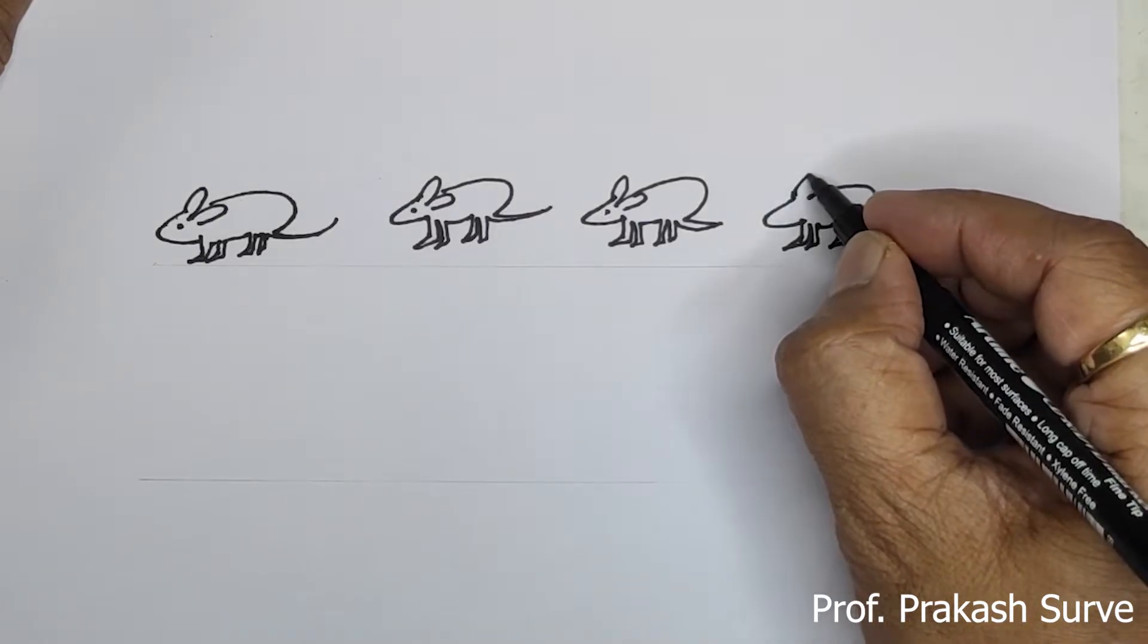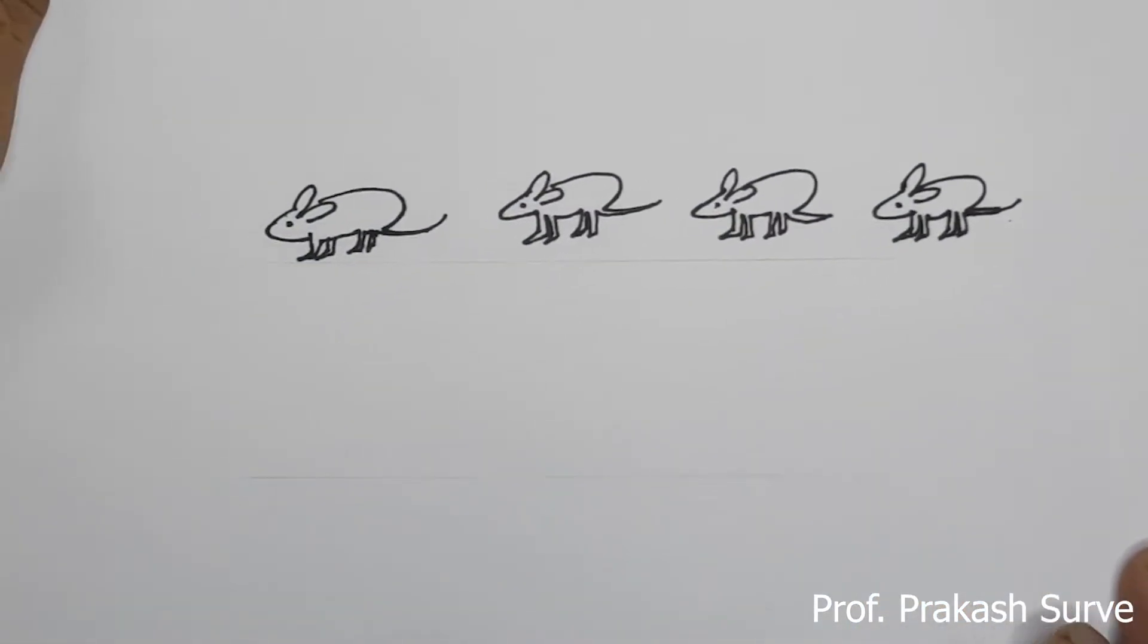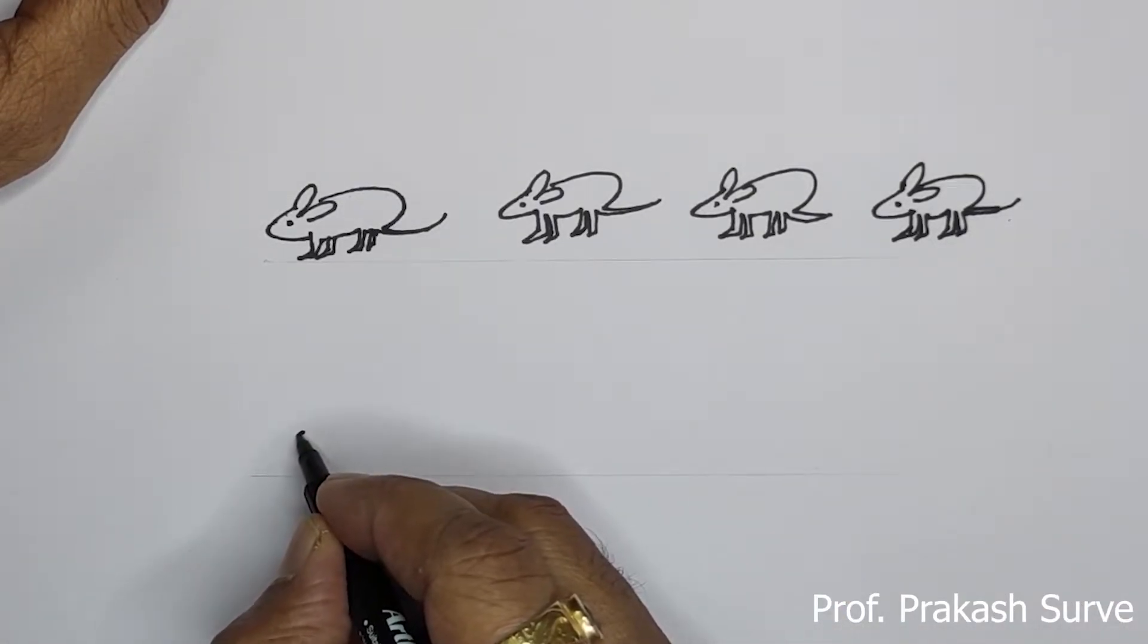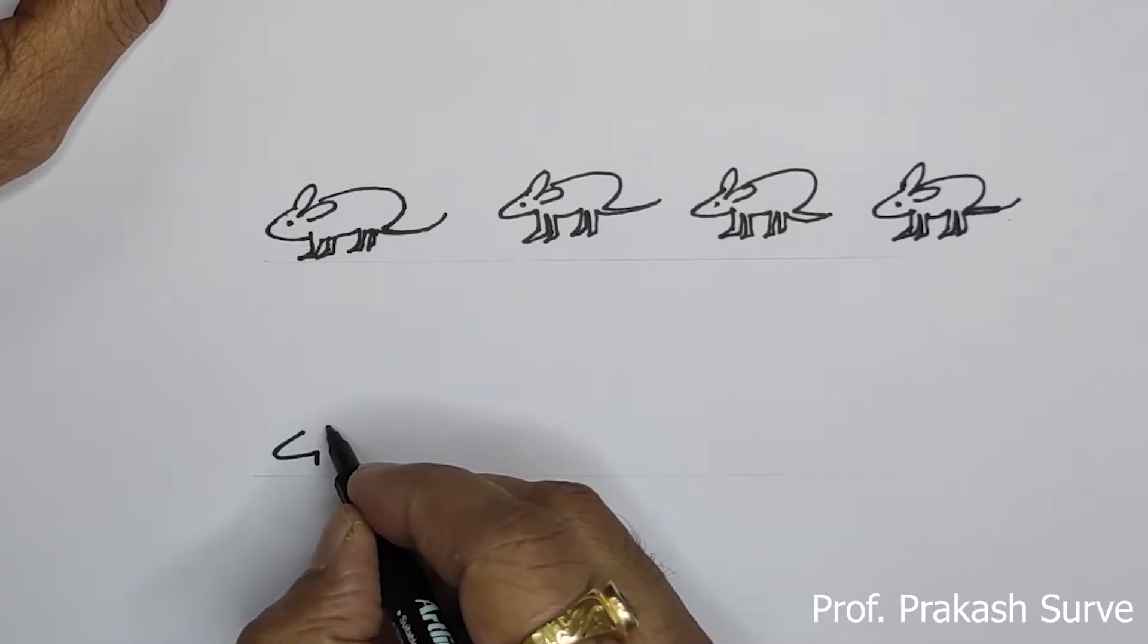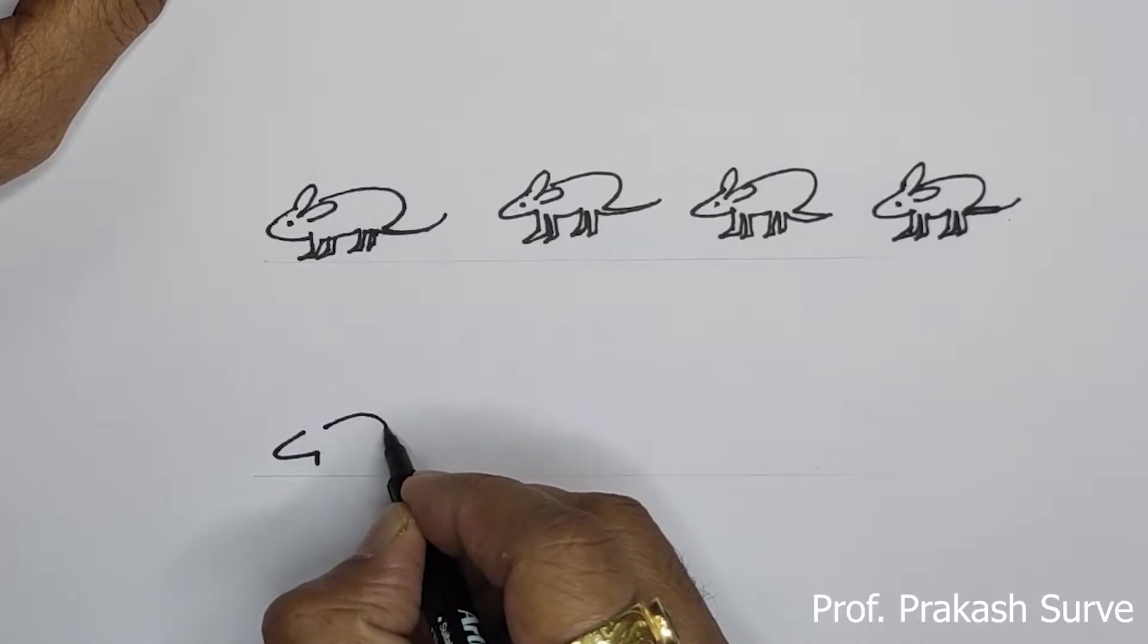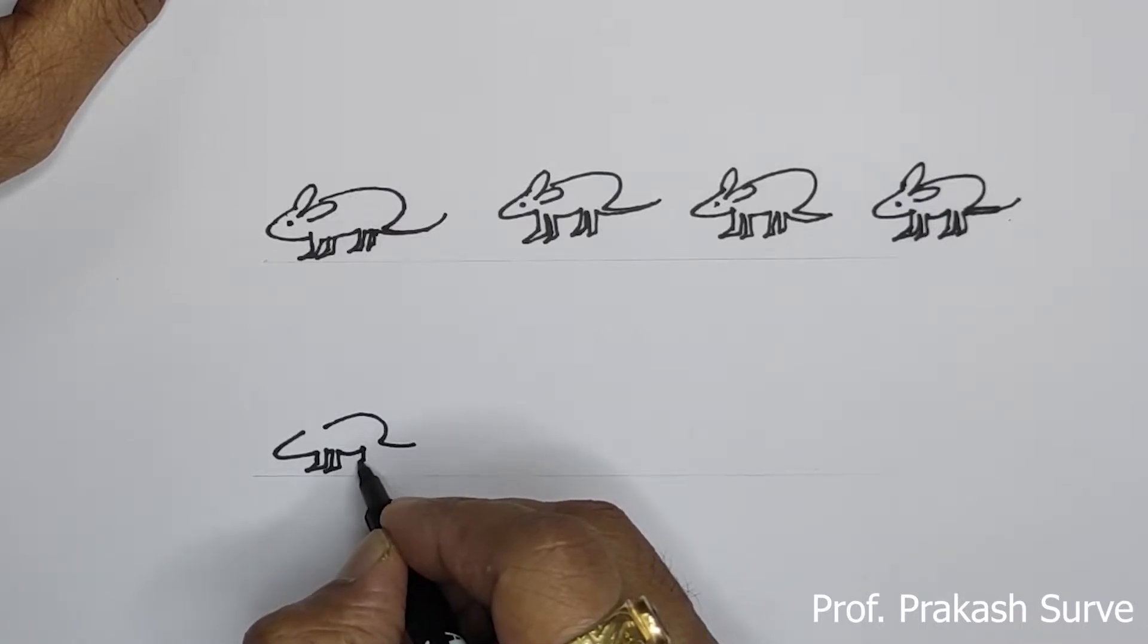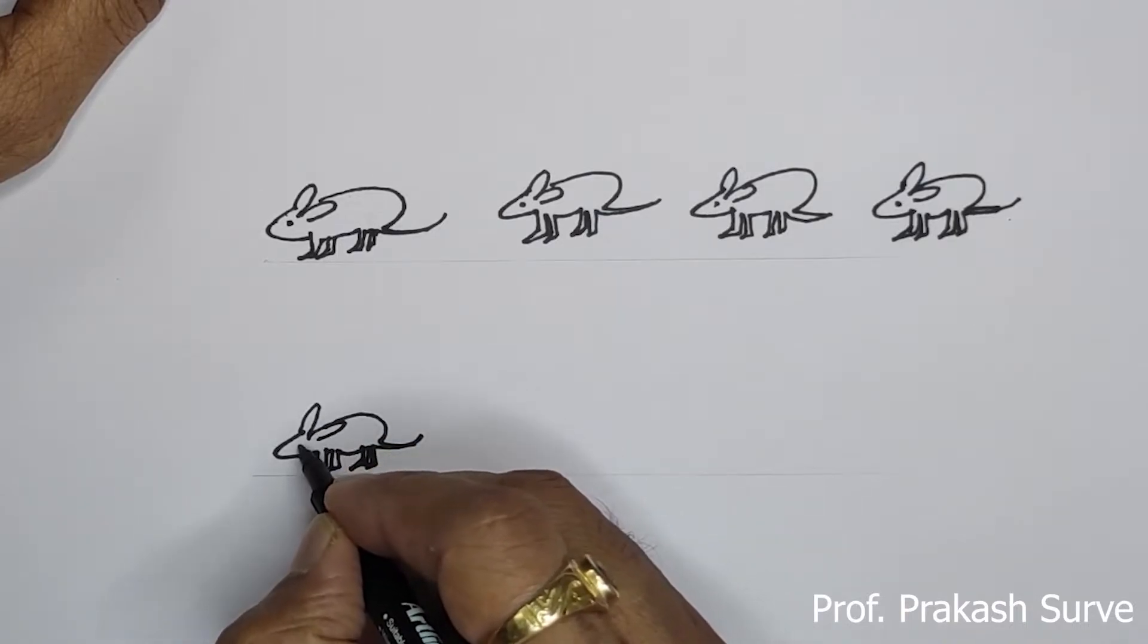So here we got the four rats. Now on the next line here, after injecting the strain. So after injecting the rough strain this rat will remain alive, so same the same shape will draw. So there is no effect.